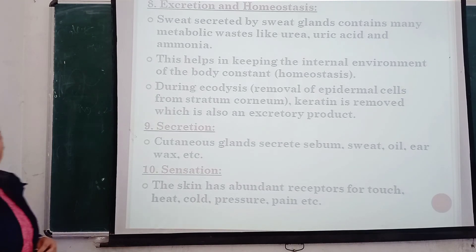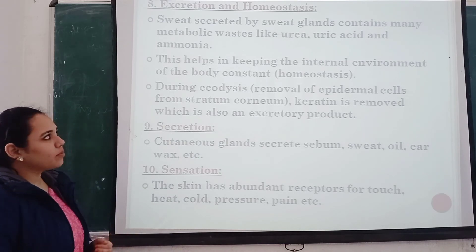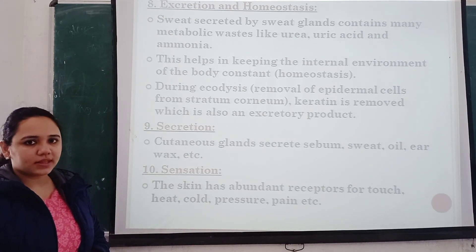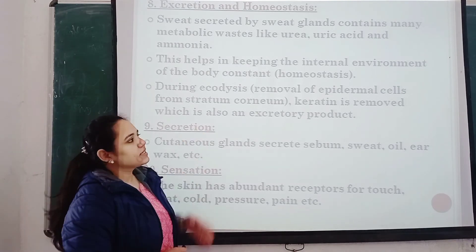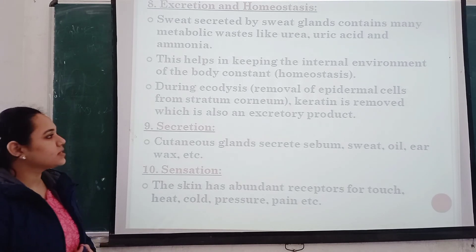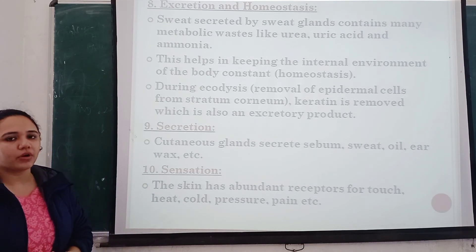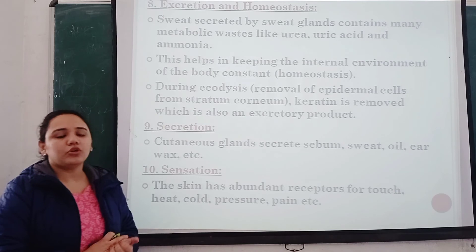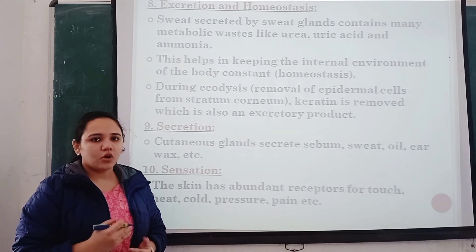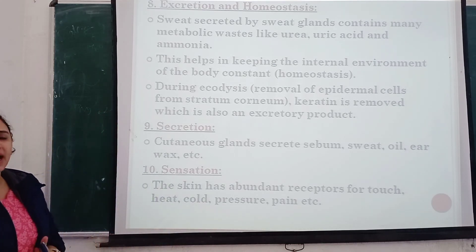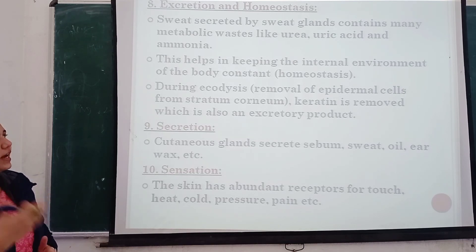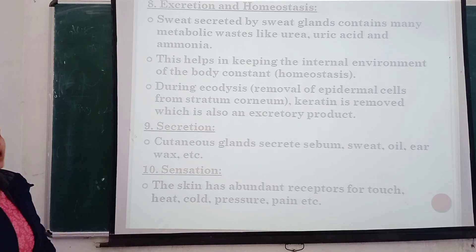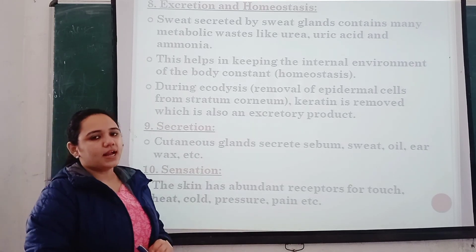Next is excretion and homeostasis. The sweat secreted by sweat glands contains many metabolic waste products such as urea, uric acid, and ammonia. This helps in keeping the internal environment of the body constant, which is homeostasis. During ecdysis — that is, removal of epidermal cells from the stratum corneum, the uppermost layer — keratin is removed, which is also an excretory product. That is how the skin is involved in maintenance of homeostasis and the excretion process.